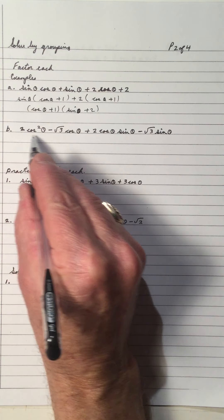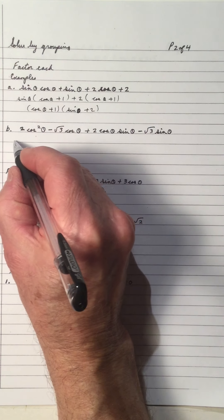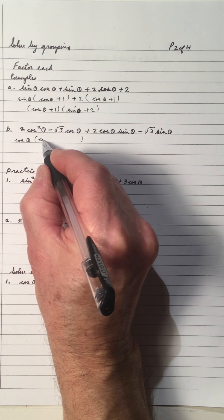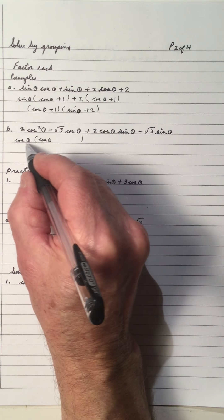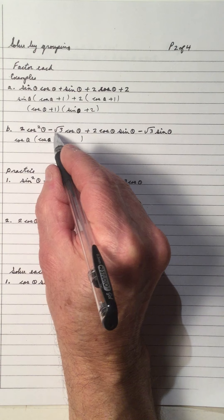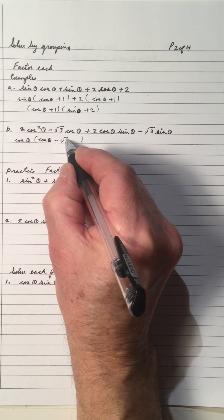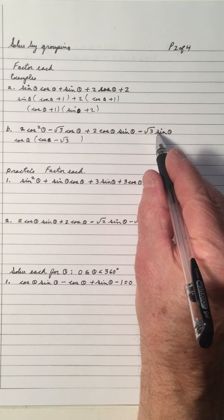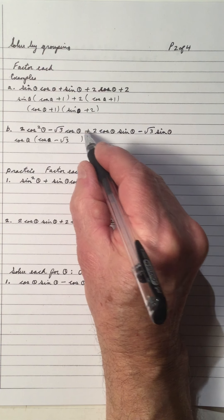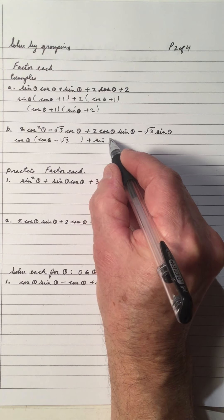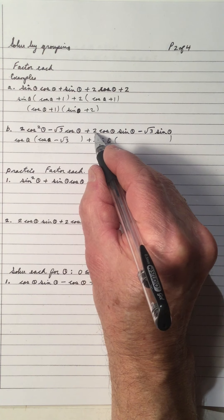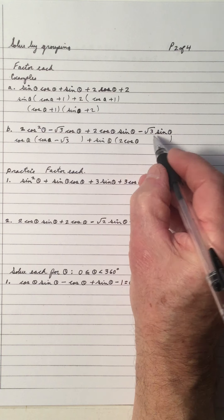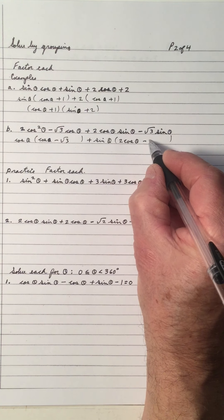So let's do some practice on these four terms. Let's take the first two and I see a cos theta that's common. So factor out the cos theta: two cos squared theta divided by cos theta is cos theta, and negative three cos theta divided by cos theta is negative three. And in the next two, I see sine is common in these two.